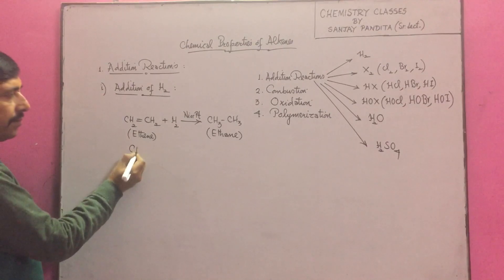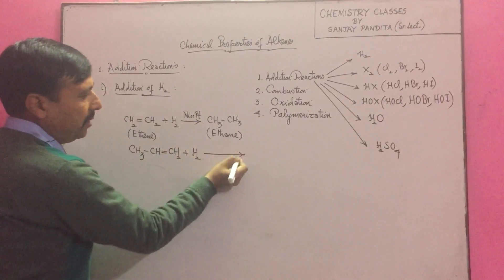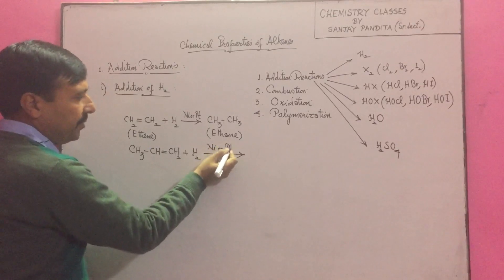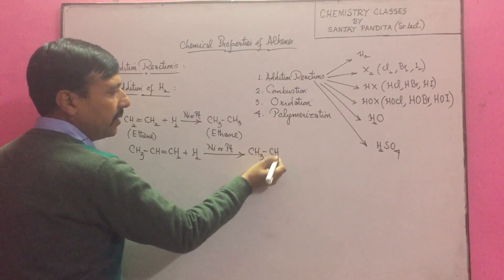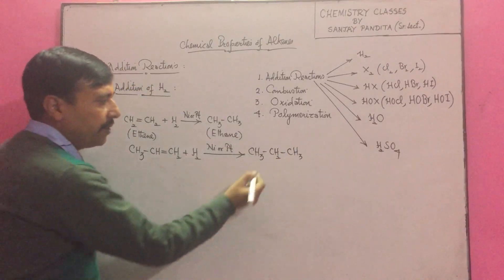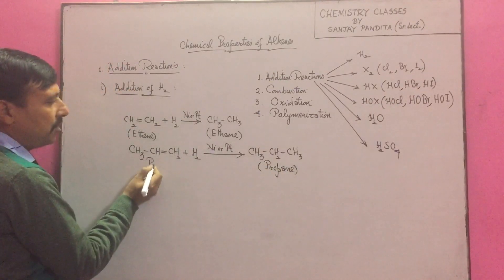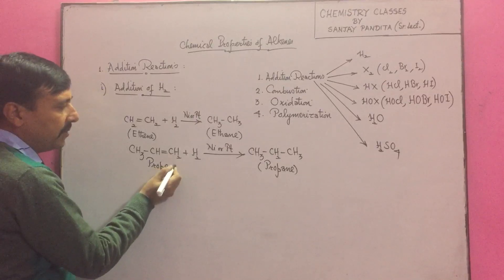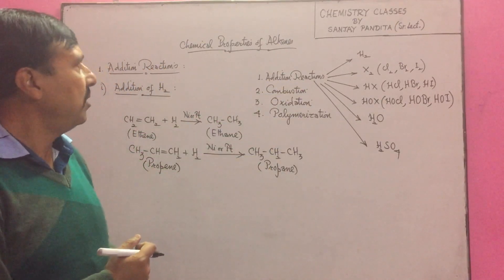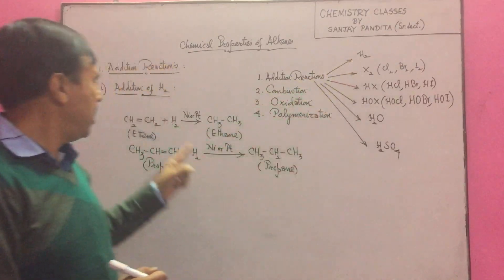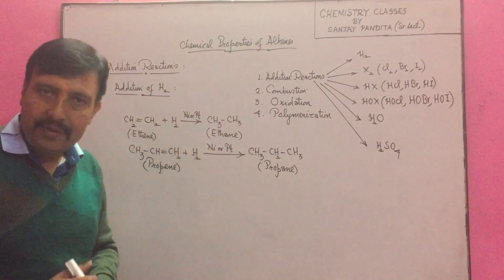We get ethane — a single bond, saturated compound. In the same way, if I take propene and add H₂ in the presence of nickel or Pt, one H goes to each carbon across the double bond and we get CH₃–CH₂–CH₃, which is propane — a three-carbon single-bond chain. Addition of hydrogen gives us alkanes.